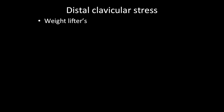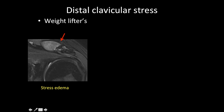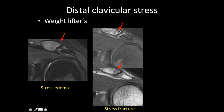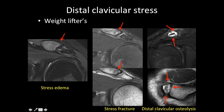Before finishing, let's discuss distal clavicular stress, commonly seen in weight lifters. Repeated weight lifting causes multiple micro-fractures in the clavicle, which can result in marrow edema in the lateral end of the clavicle — called trabecular edema — or can cause a stress fracture seen as a hypointense line. Alternatively, repeated micro-fractures can lead to osteolysis of the lateral end of the clavicle, called distal clavicular osteolysis or 'weight lifter's shoulder,' showing widening of the joint space, an irregular lateral clavicle margin, and potentially a chondral body within the joint.